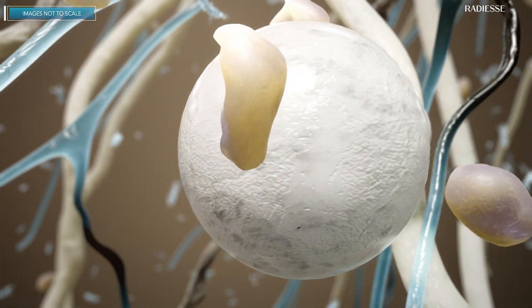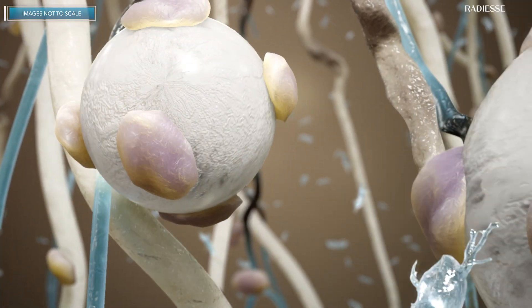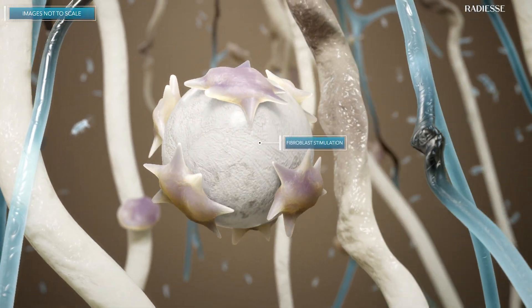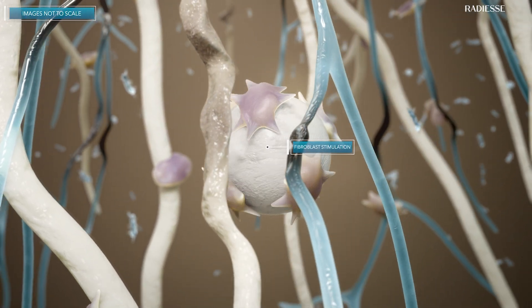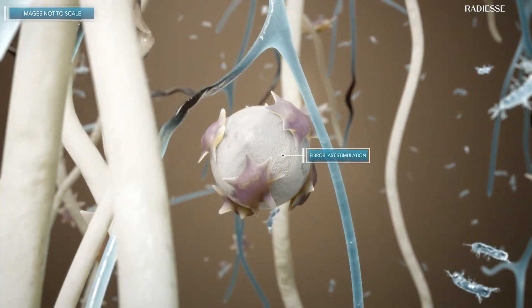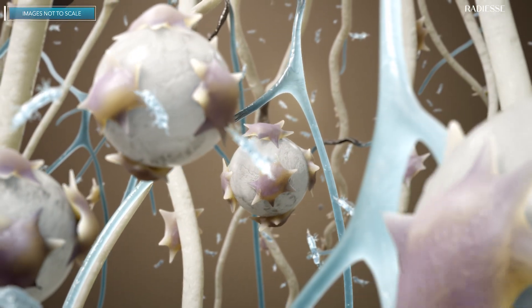Direct contact with Radiesse microspheres provides mechanical activation of fibroblasts, also known as mechanotransduction. The fibroblast activation occurs through a regenerative mechanism of action that stimulates the body's own natural processes to restore the five key components of the ECM.